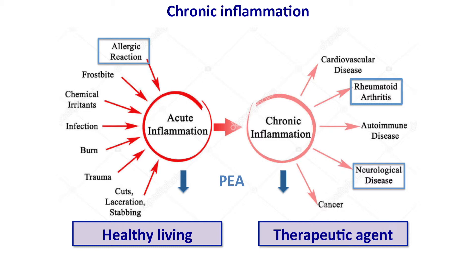What does PEA do in this context? PEA, particularly in chronic inflammatory conditions—and this has been shown in human tissue—is lower. The enzyme that makes it goes down, the enzyme that destroys it goes up, and PEA levels drop. This has been seen in allergic reactions, rheumatoid arthritis, and neurological diseases. We need more data, but this is where we are right now.